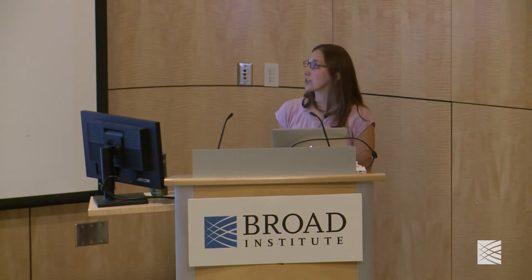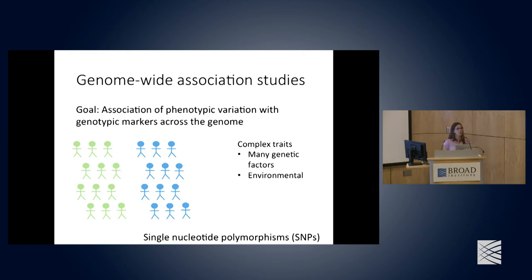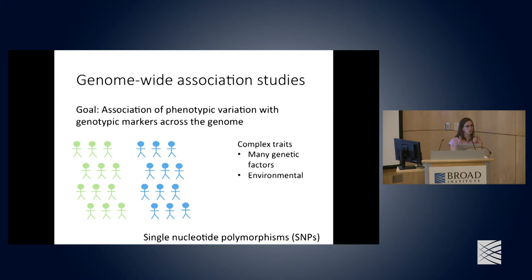Today we're going to talk about GWAS and secondary analyses of GWAS results. The goal of genome-wide association studies is to associate phenotypic variation with genotypic markers across the genome. Typically these genotypic markers are single nucleotide polymorphisms — places in the genome where a single base pair is changed by a single nucleotide.